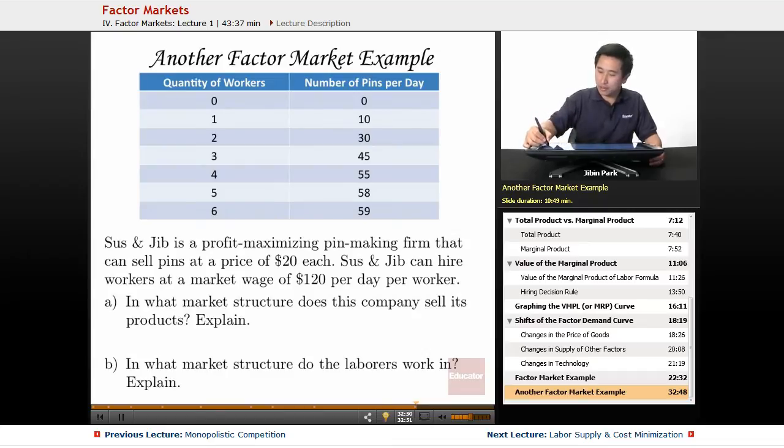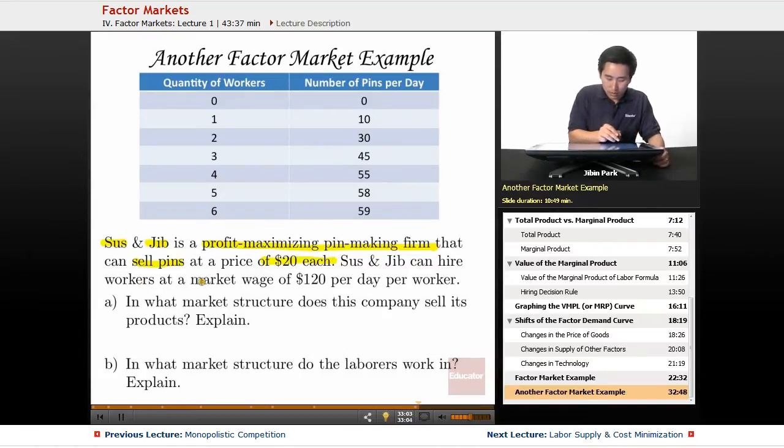Let's take another example. Say you have a company called Susan Jib. Susan Jib is a profit-maximizing pin-making firm that can sell pins at the price of $20 each. Susan Jib can hire workers at a market wage of $120 per day per worker.